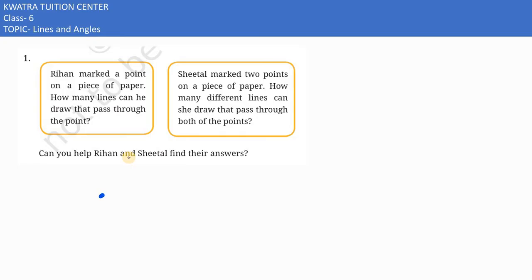Now, the question is asking how many lines can pass through it. So through one single point, many lines can pass through it. What is it like? Second can be here, third can be here, fourth can be here, and infinite number of lines can pass through one single point. Remember, so what would be the answer for the Rihan case? Infinite. Let's see Sheetal.